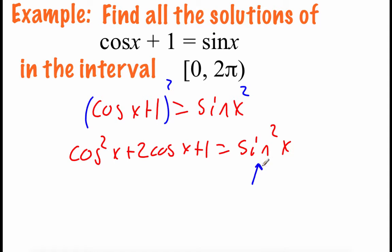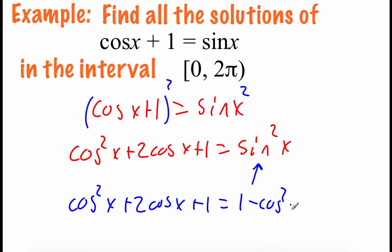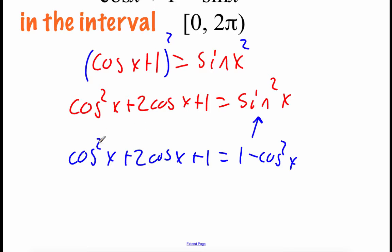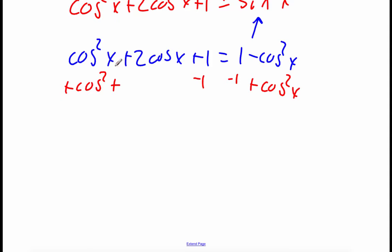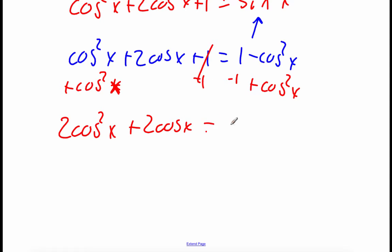Now we could use a Pythagorean identity to replace that sine squared, and we're going to replace that with 1 minus the cosine squared of x. This is quadratic — we've got squareds going on — and when we solve quadratics, we typically want to have a 0 on one side. So I'm going to move things over by adding cosine squared of x to the left-hand side and subtracting the 1 at the same time. Those end up canceling out, so we get equals 0.